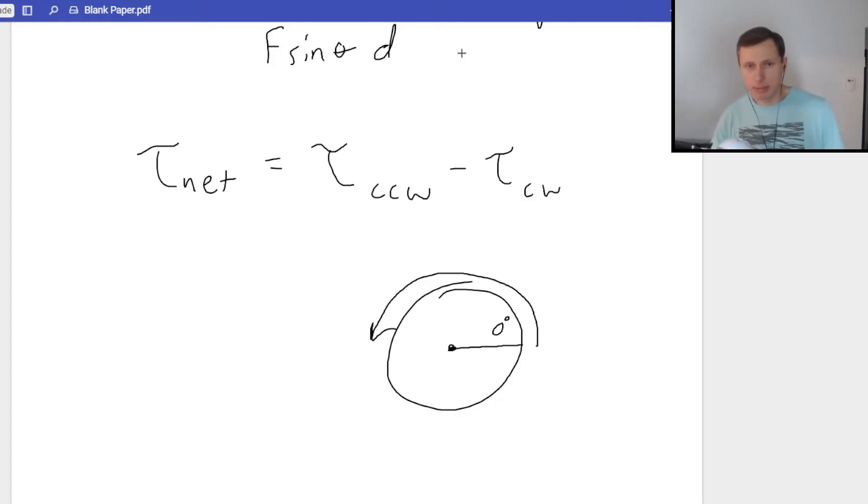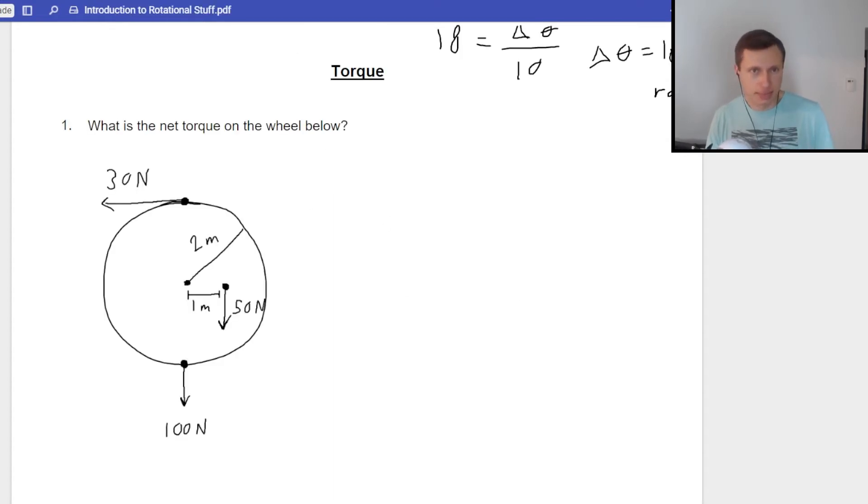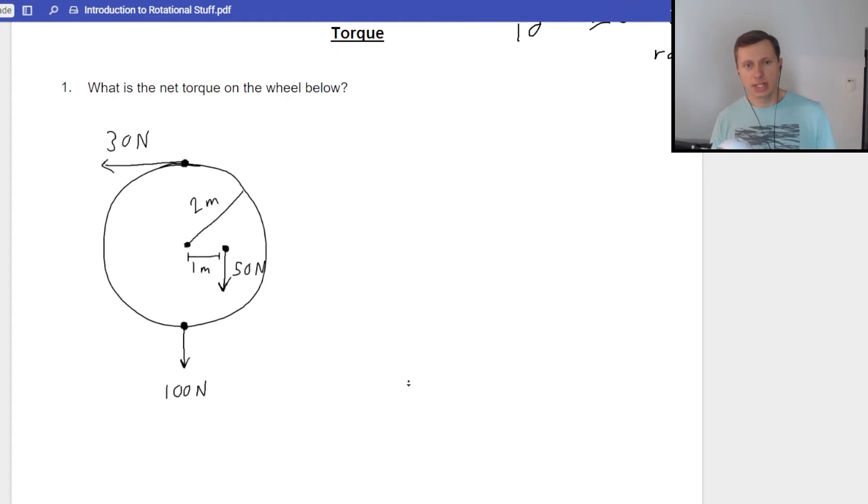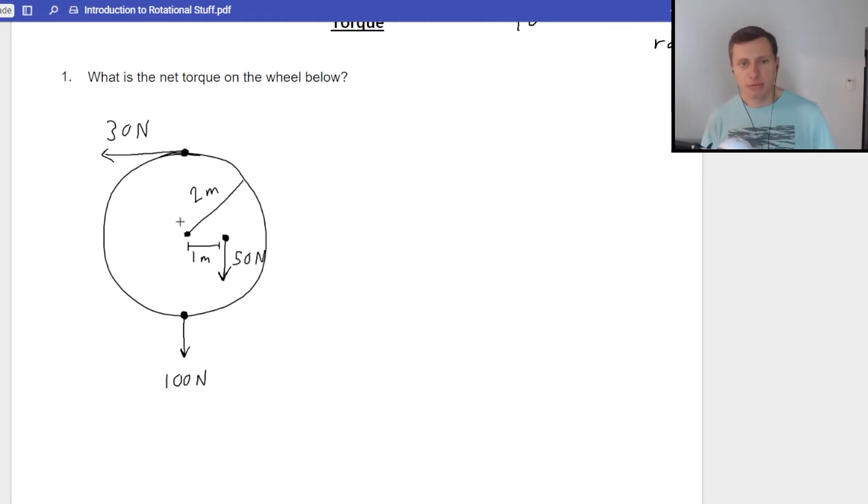So let's go ahead and look at a couple examples here. For the examples, I will be using counterclockwise as positive and clockwise as negative just to follow suit with the equation. So here's the first one. I want to find what is the net torque on the wheel below. I see I have three torques here, the 30 newton force, remember forces produce torques. So I have a 30 newton force, a 50 newton force, and a 100 newton force like this. Let's deal with these forces one at a time, starting with the 30 newton force since that's the easiest.